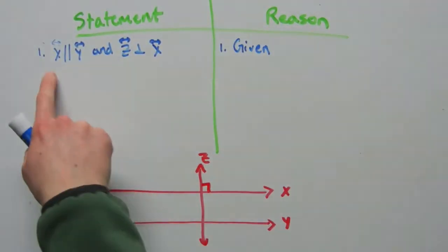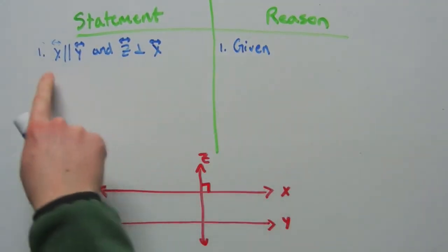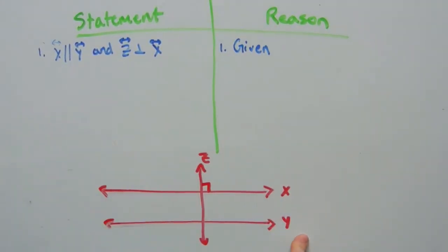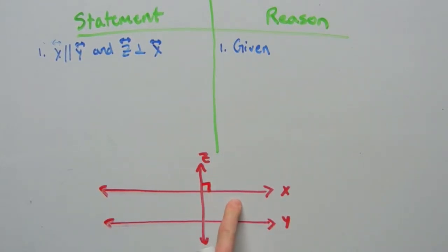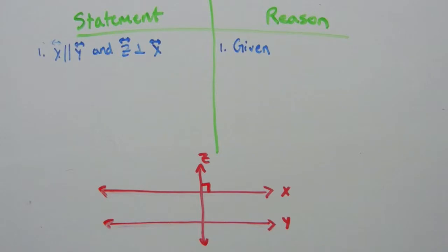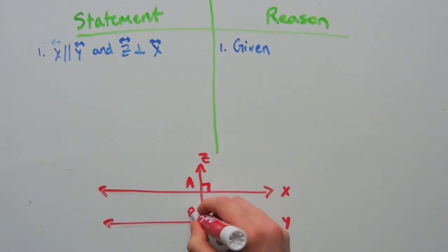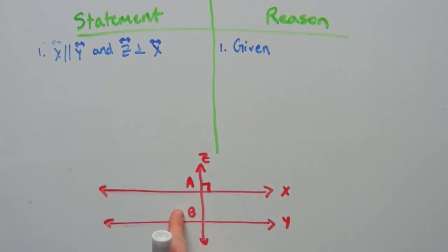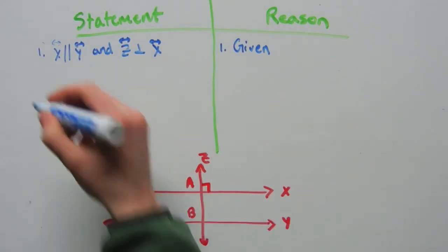To start, our first step is to list our given: X is parallel to Y, and Z is perpendicular to X. That's what's given in the first part of our theorem. We're going to eventually use the corresponding angles postulate. So let's go ahead and name this angle A and this angle B — those are corresponding angles.